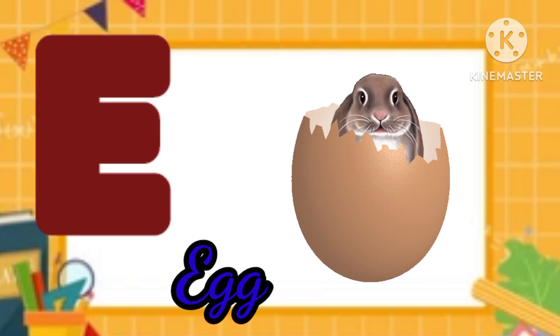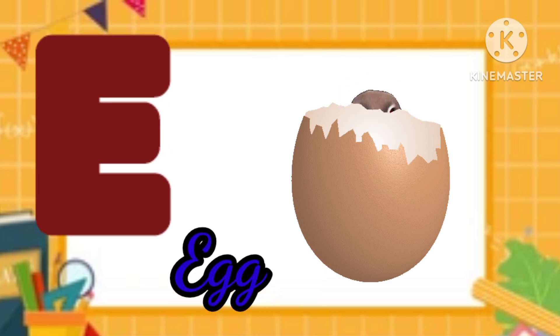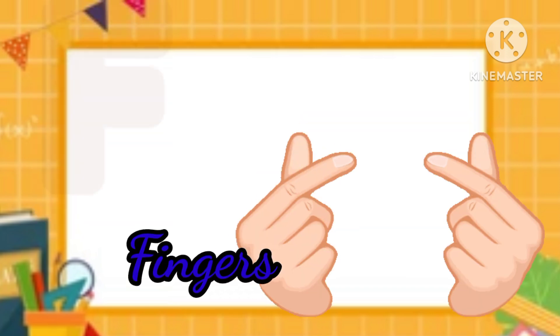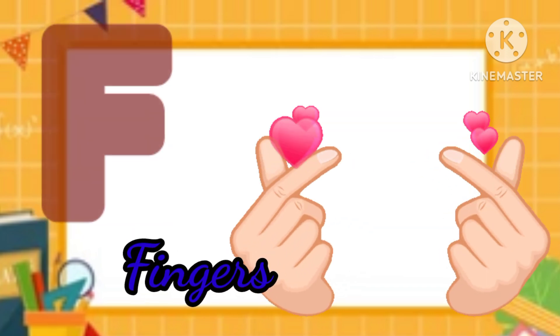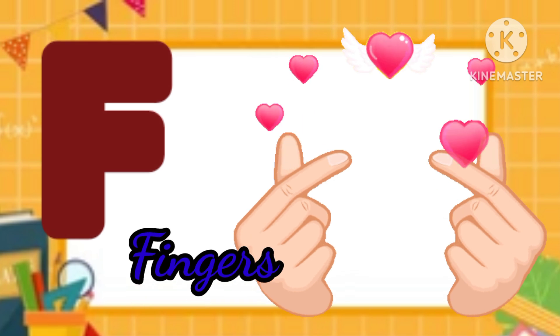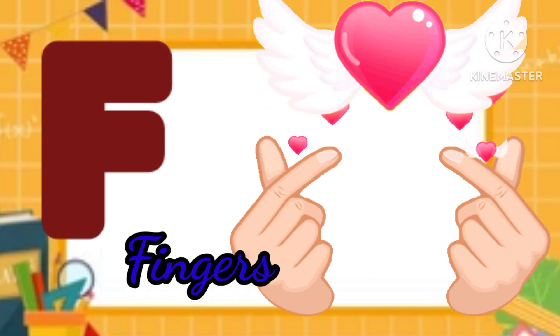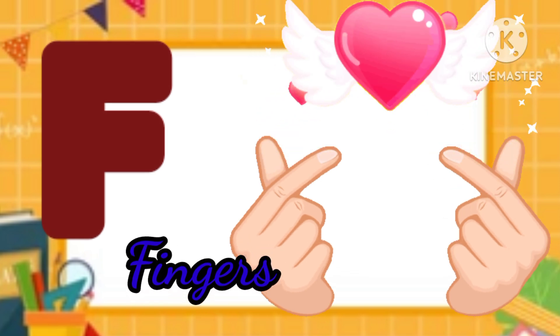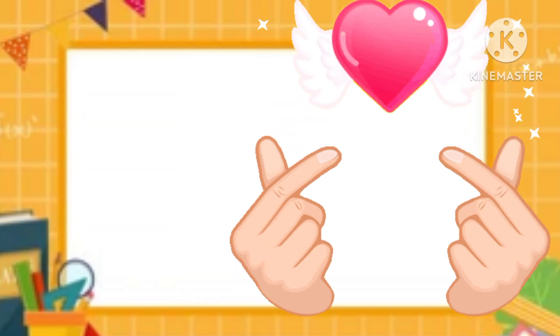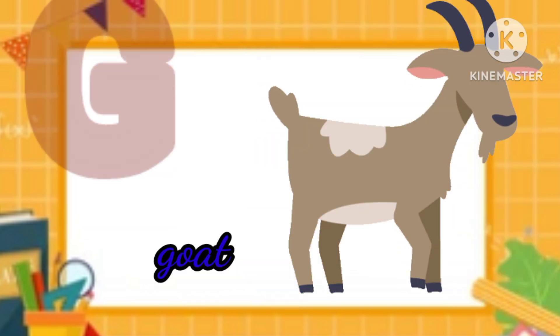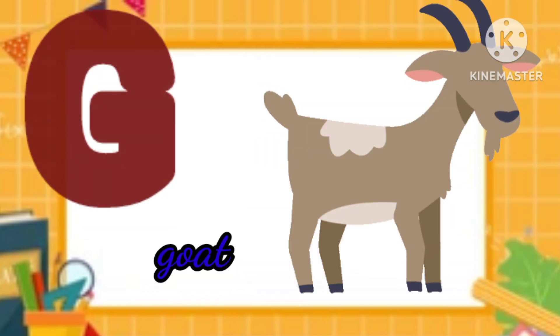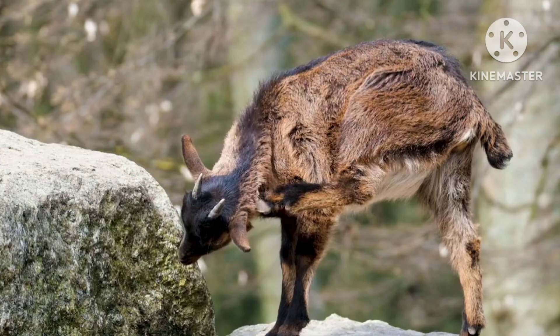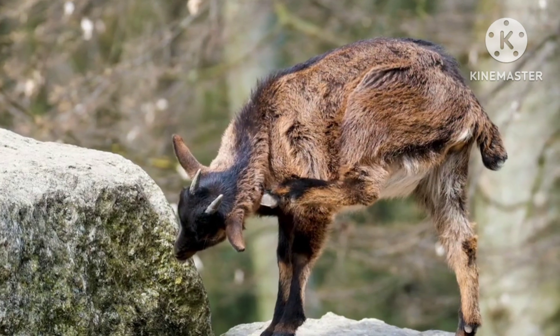E is for Egg. E, E. Egg. F is for Finger. F, F. Finger. G is for Goat. G, G. Goat.